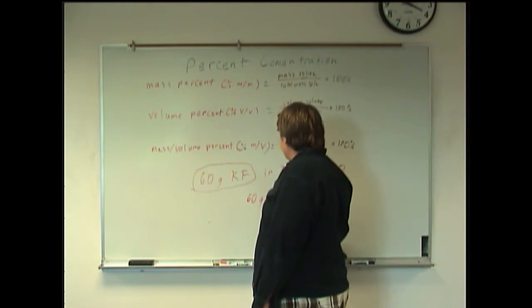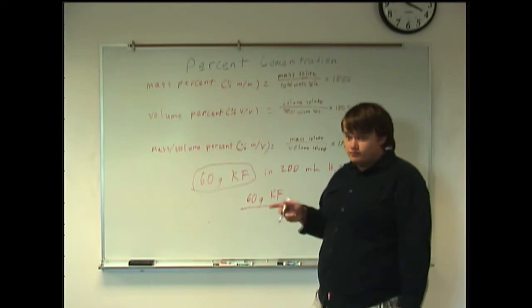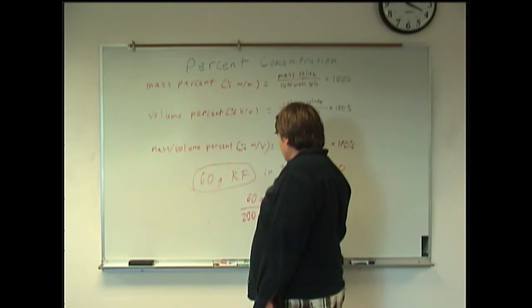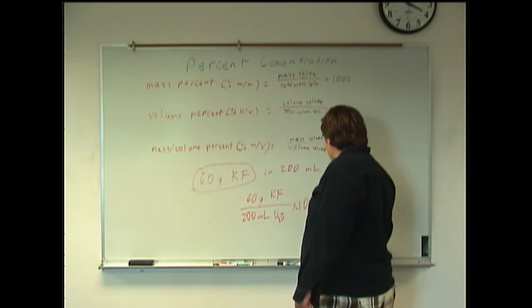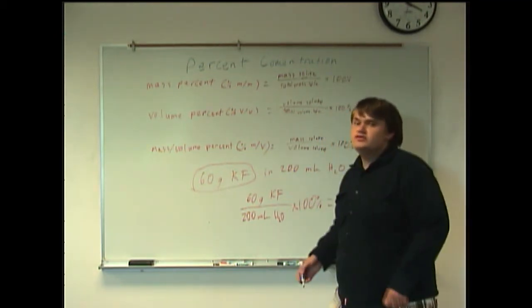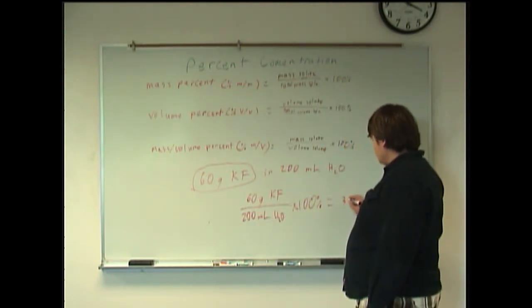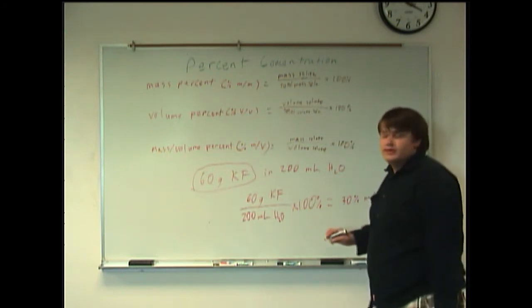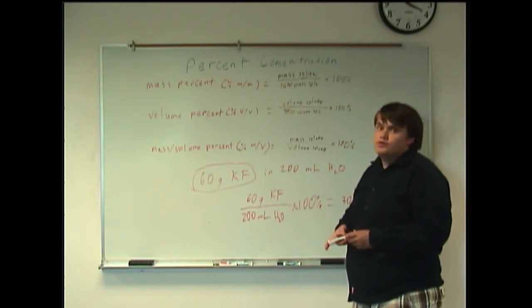So 60 grams KF, then divide it by the volume, that's an important thing to remember, the volume of the solvent. So again, 200 milliliters of water times 100% as usual. Then, doing those calculations, we get a final answer of 30% mass by volume of potassium fluoride. Again, you want to remember the mass by volume portion of your answer when you report your units.